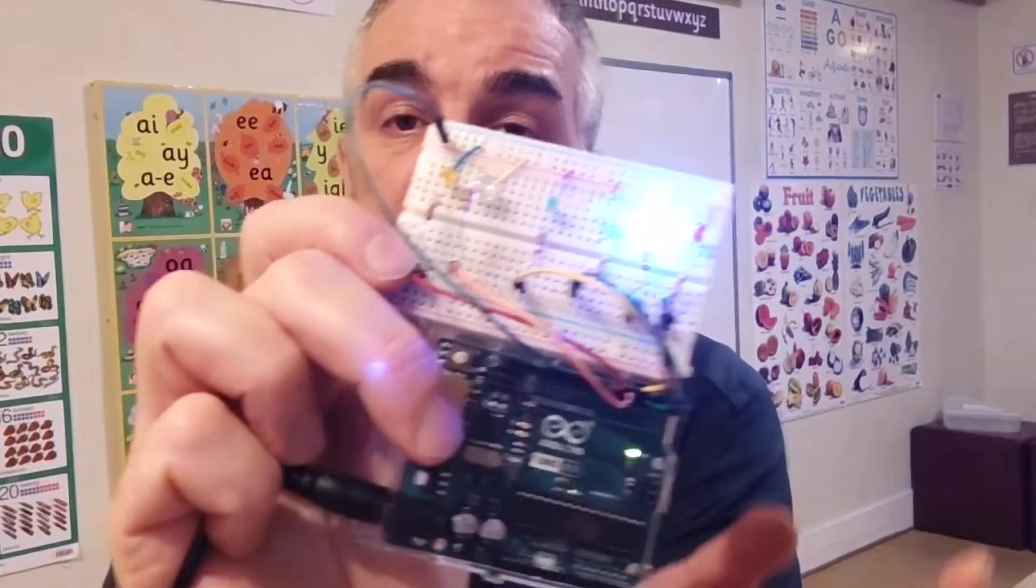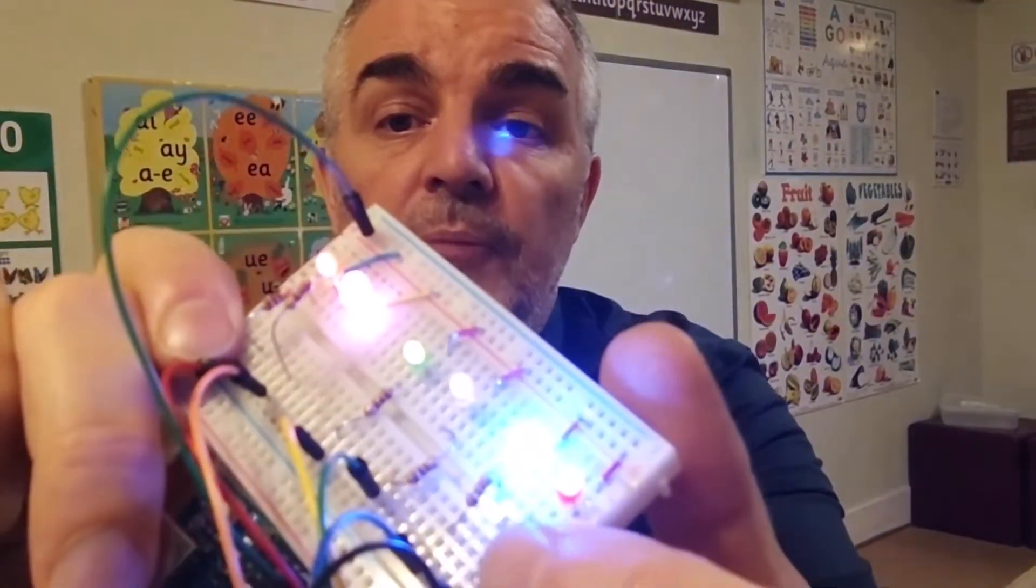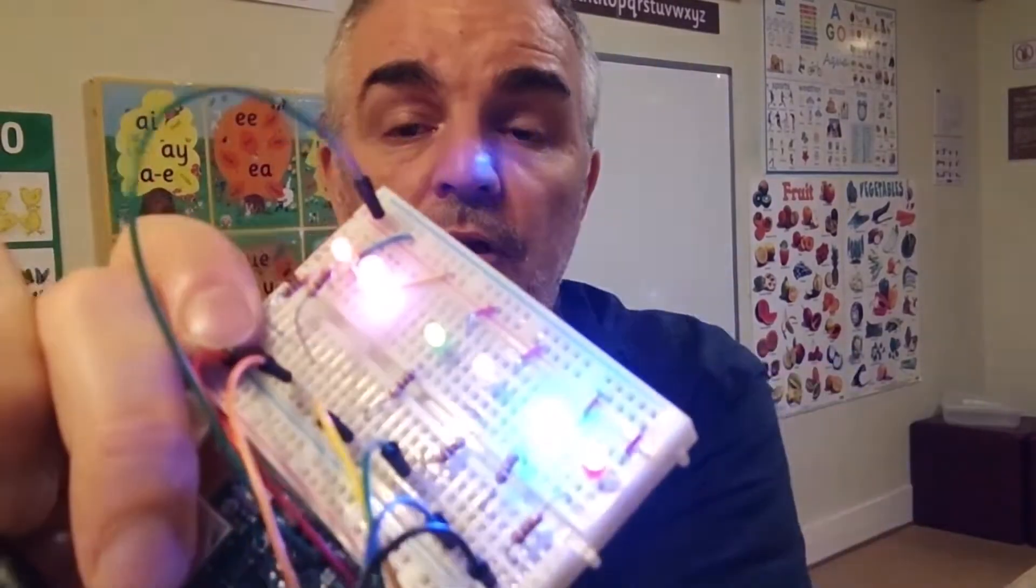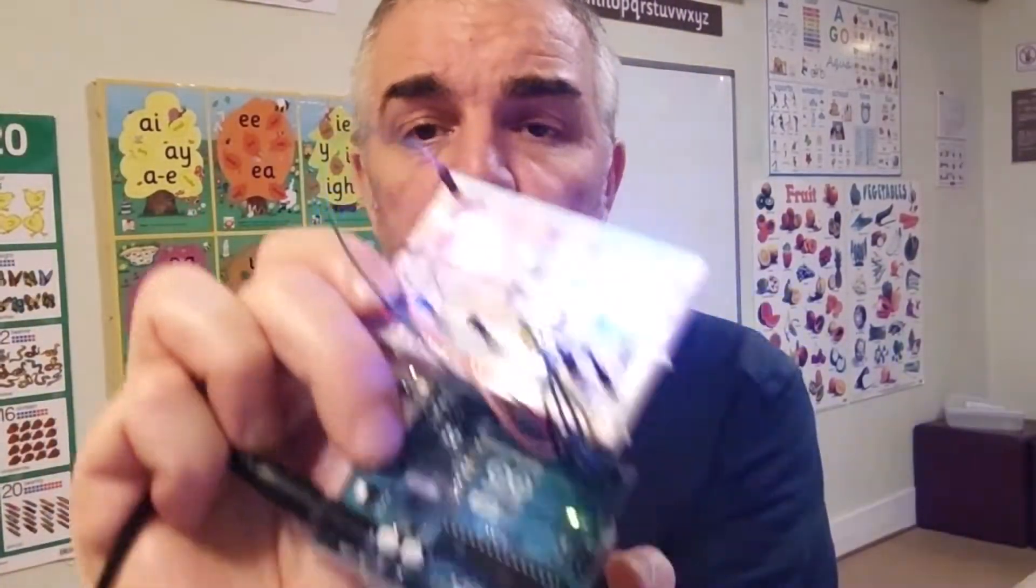But the question did come up, as you can see, that every LED on here has a resistor before it, and the question was: why do we use resistors? Why do we have to use a resistor with an LED?